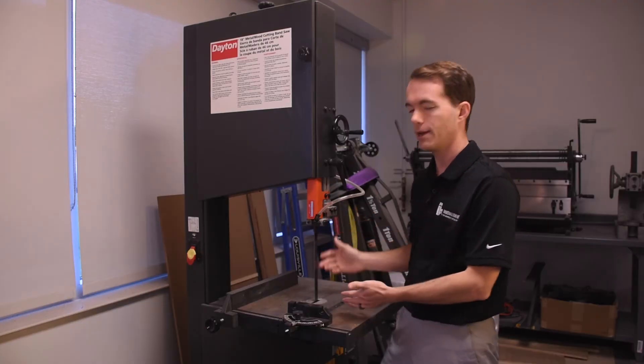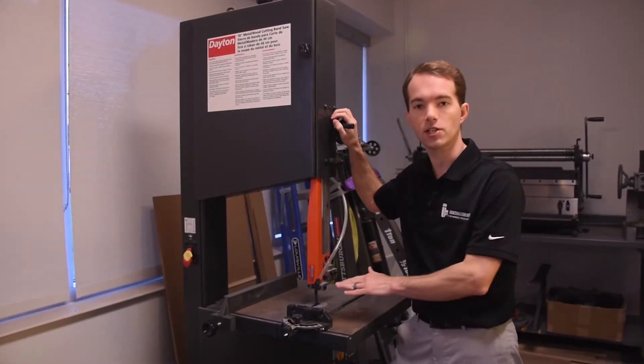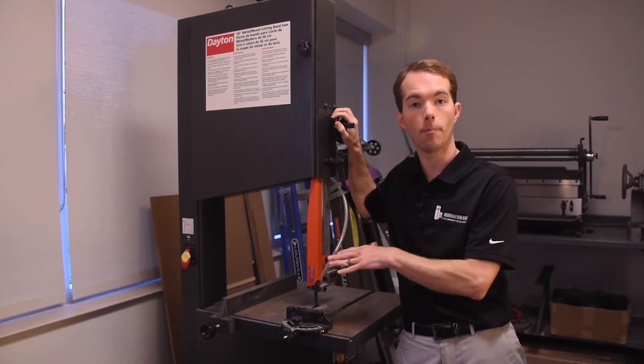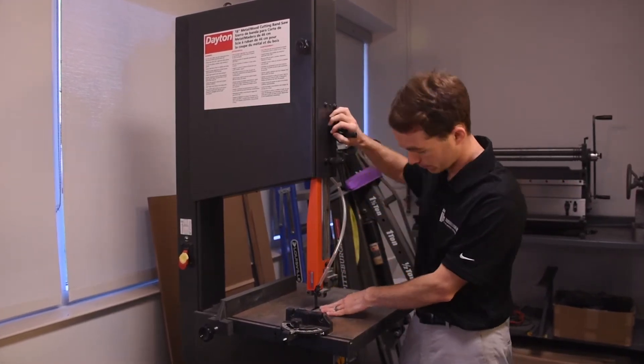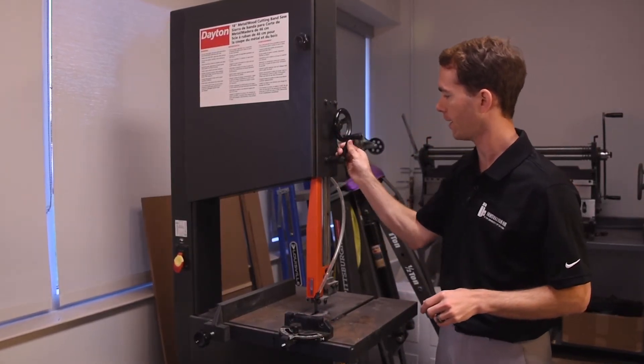This large upper blade guide here can be adjusted. You'll need to loosen this here and then turn this wheel. You want this to sit about a quarter inch above the top of your material, about right there for something thin, and then lock it back down.